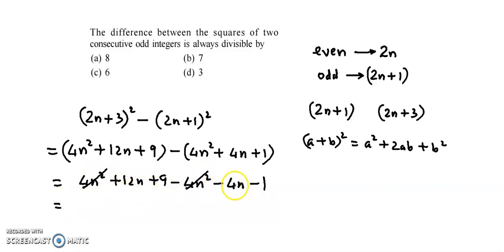Now 12n minus 4n, that's 8n, and 9 minus 1, that's 8. So basically we have 8 times (n plus 1). So this difference is a multiple of 8, and hence we can say this difference will be divisible by 8. So the correct answer is option a, 8.